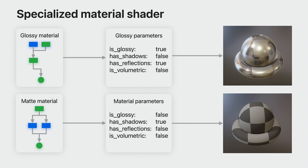To make the most optimal shader variant, you should use Metal specialization with function constants. Simply declare function constants in your Metal shader and set their values at runtime when they're changed. The material buffer contents simply become constants in your shader pipeline states, and dynamic branching is eliminated. Specialized materials give you the most performance.